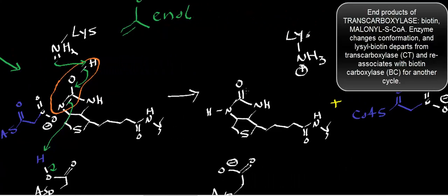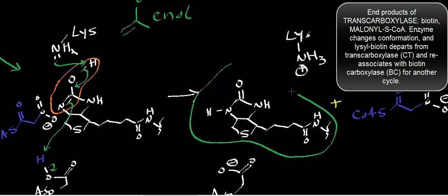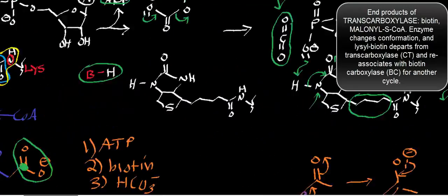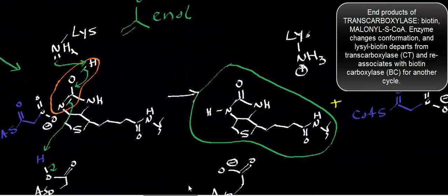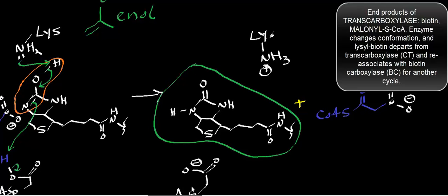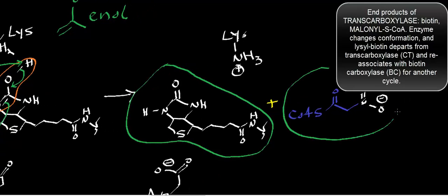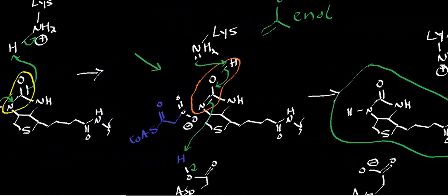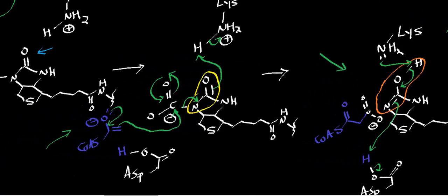What that effectively does is regenerate the resting state of biotin and the resting states of both active site residues. Our biotin is now reset to the state it was at the very beginning of the mechanism. In the process, we generate malonyl-S-CoA. I want to draw your attention to the step where we had the enolate version of acetyl-CoA: when we reform the carbonyl and the electrons attack the carboxyl carbon, we get a nucleophilic acyl substitution — and that's where we actually generate the malonyl-CoA.